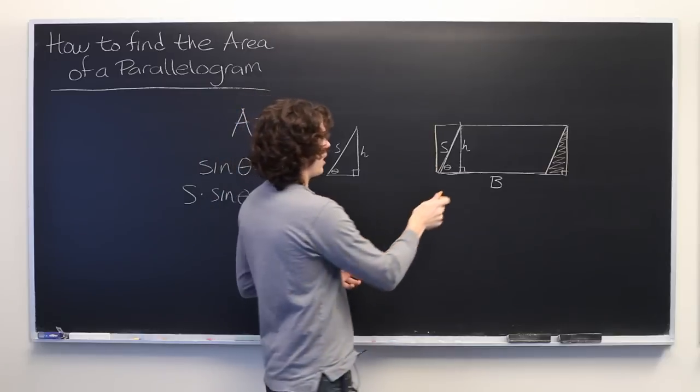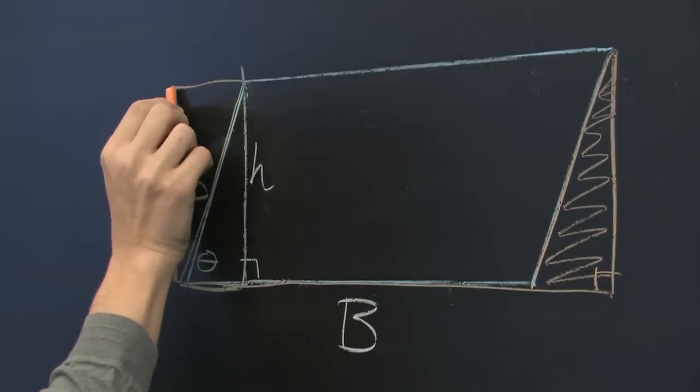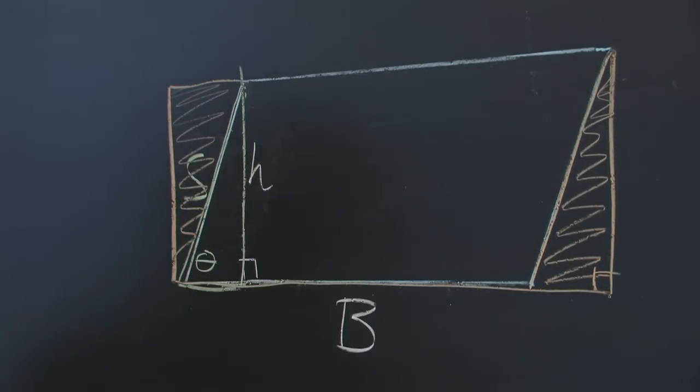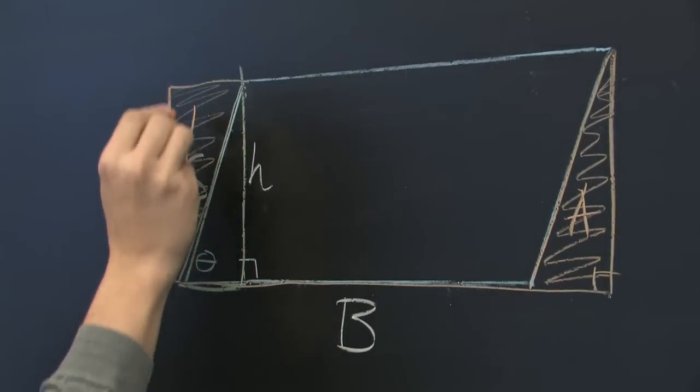Well, you can easily show that this triangle is congruent to this triangle. So this area is going to be equal to this area.